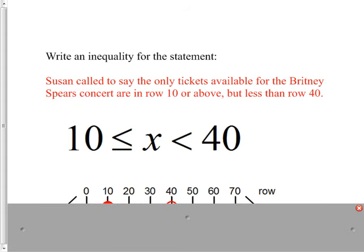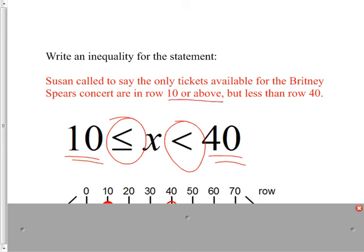You always put the smaller number on the left and the bigger number on the right, and then the signs follow naturally. 'Row 10 or above' means 'or equal to,' so that's ≤ with the equals. 'Less than 40' means not 'or equal to' — so it's a strict less than sign. If you graph it, it would look like that.